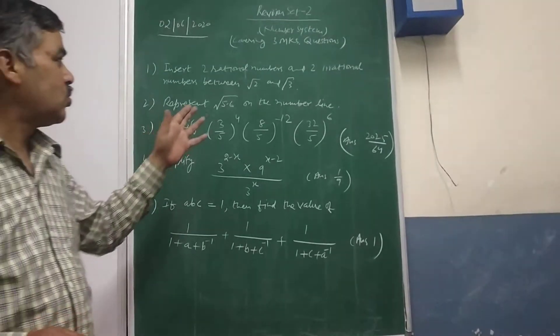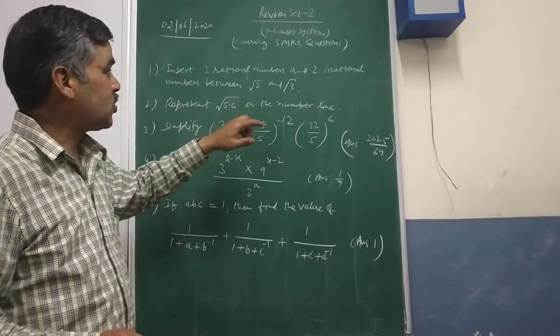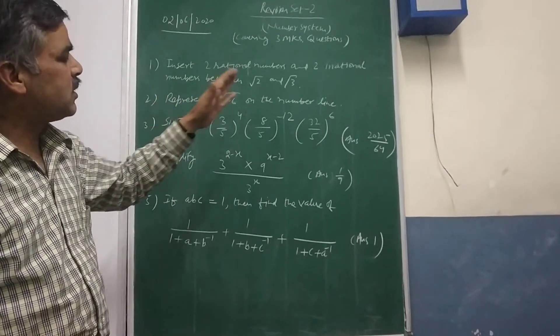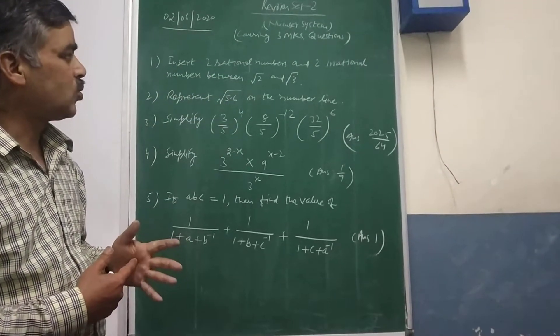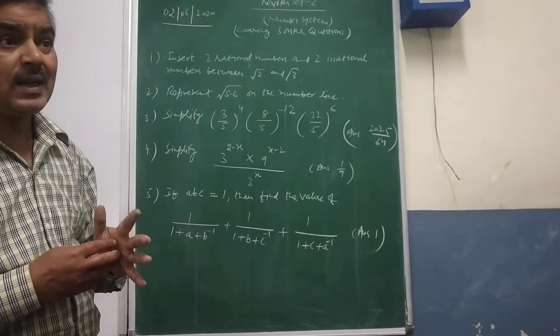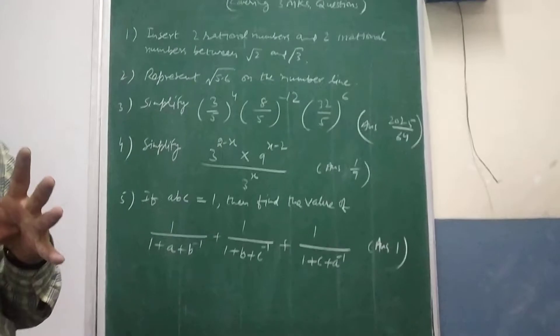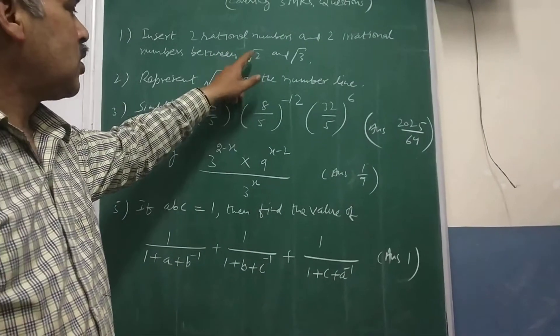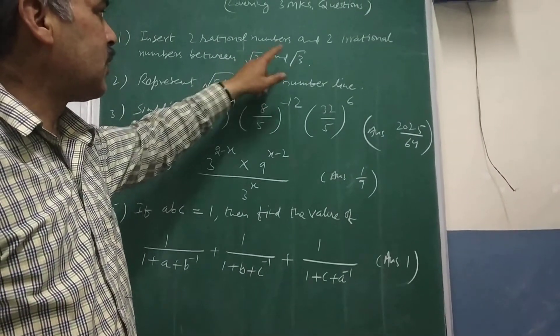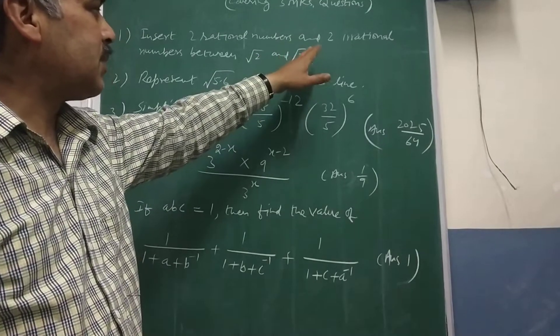So you just know the definition. Whenever you are answering these questions infinite numbers are lying between √2 and √3 may be rational may be irrational. But what is the definition of rational and irrational? Like if you go for this 1.4 something it is coming, 1.732 something it is coming.